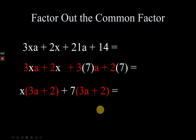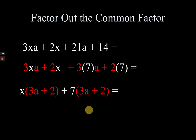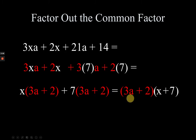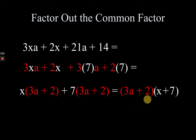It's a reverse of distributive property — that's common factoring. Now we do another round of common factoring. Notice that the red ink terms are exactly the same, so 3a + 2 is now the common factor. We write it in one parenthesis in front, and x + 7 in another parenthesis. The final answer is (3a + 2)(x + 7), and that's factoring by grouping.